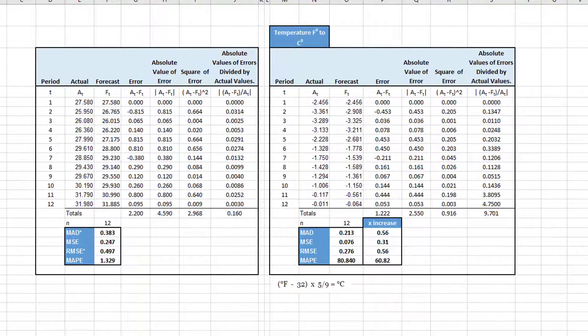But let's look at what happens if we are trying to evaluate a forecast that is based on interval data instead of ratio data. Here I assumed the original data was temperature in degrees Fahrenheit and converted it to degrees Celsius using the formula we all learned in high school, F minus 32 times five-ninths equals degrees centigrade. Notice that MAD, MSE, and RMSE did not change substantially. They changed a little bit, but they're still fairly close to those values.